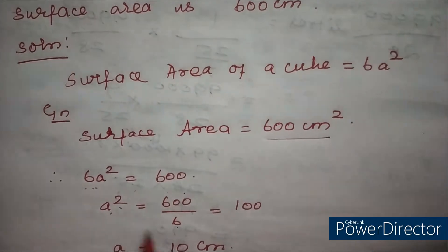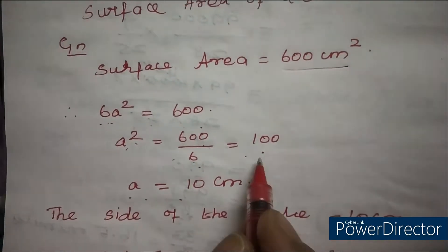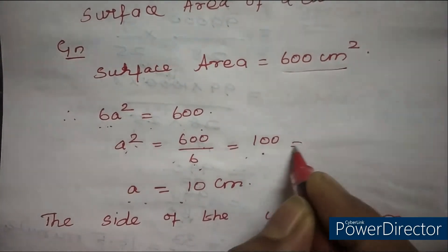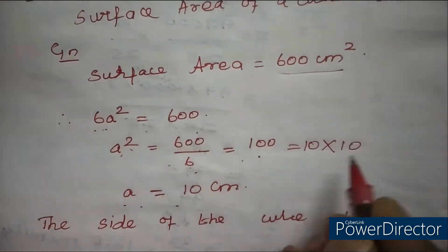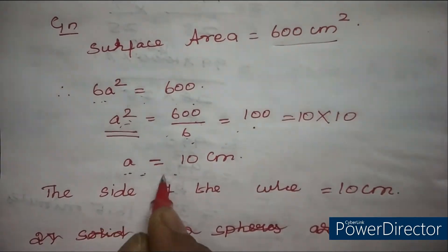From that, a² equals 600 divided by 6, so we get 100. a² equals 100, which is 10 times 10. You have to take the square root, so you get a equals 10 cm.